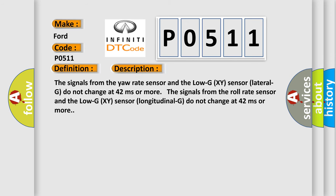The signals from the yaw rate sensor and the Low-G (XY) sensor (lateral-G) do not change at 42 milliseconds or more. The signals from the roll rate sensor and the Low-G (XY) sensor (longitudinal-G) do not change at 42 milliseconds or more.